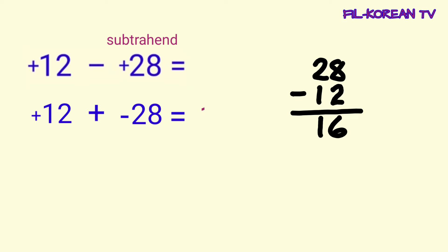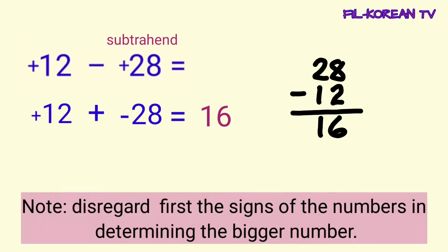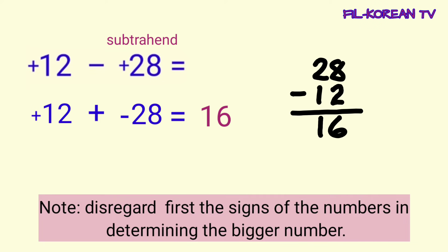16 yung sum. Ngayon, itong sum, lalagyan natin ng sign. Titignan lamang natin yung sign ng mataas na number at yun ang kukopyahin natin. 28 ang mataas na number at ang sign niya ay negative. Kaya, lalagyan natin ng negative sign ang answer. So, the answer for positive 12 minus positive 28 is negative 16.